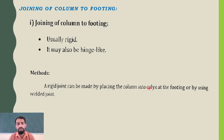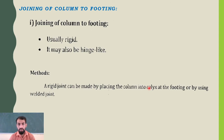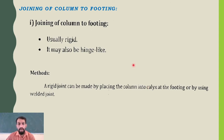For joining of column to footing, a rigid type connection is most required; otherwise the connections are not clear. We require the most easy and connectable type of connections. Usually it is rigid, but it may also be hinge-like — we have seen some column and footing hinge designs. A rigid joint can be made by placing a column into pockets at the footing, or by using welded joints.